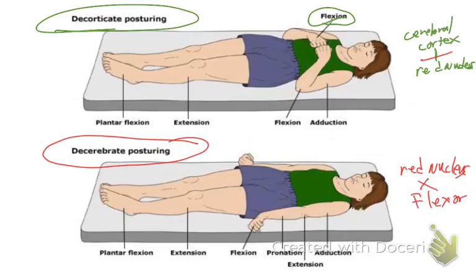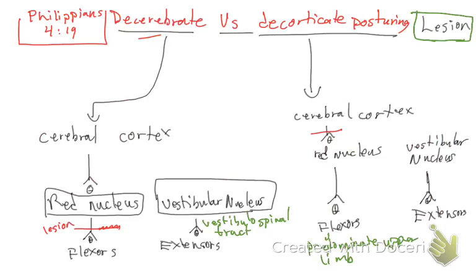One more detail: I mentioned the vestibulospinal tract between the vestibular nucleus and extensors. There is also another tract called the rubrospinal tract. What predominates in the decerebrate? The extensors predominate in the decerebrate posture.